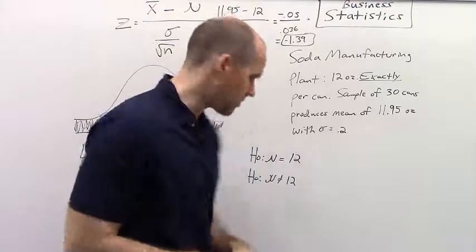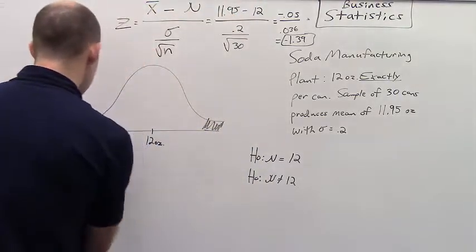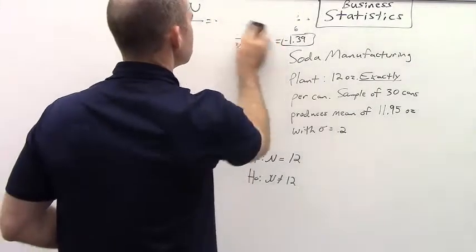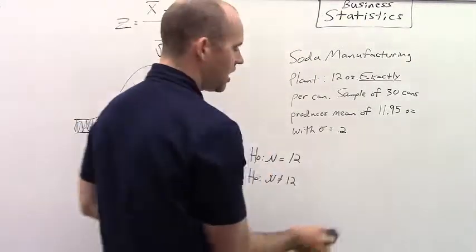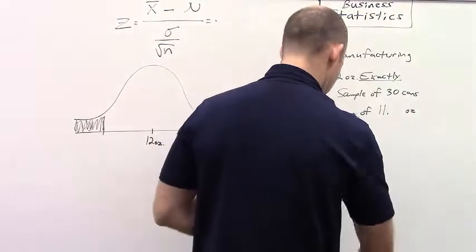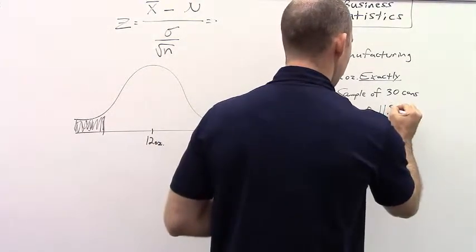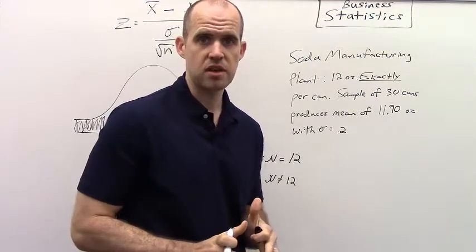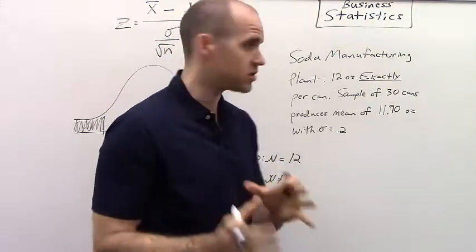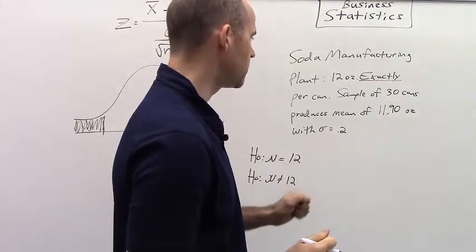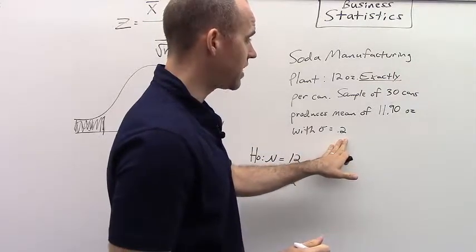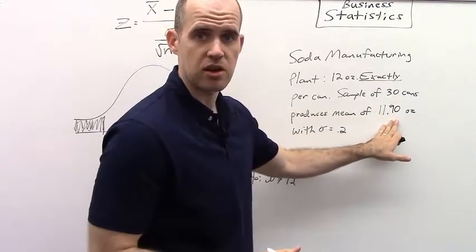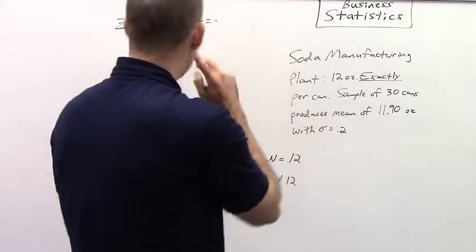Now, let's change things up just a little bit with this particular scenario. Let's imagine that instead of 11.95, we actually have 11.90 ounces. And so now we see a much larger difference between these two. We'll say that the standard deviation is still the same, sample is still the same, but now we see a much larger difference between them. Now, what would happen?